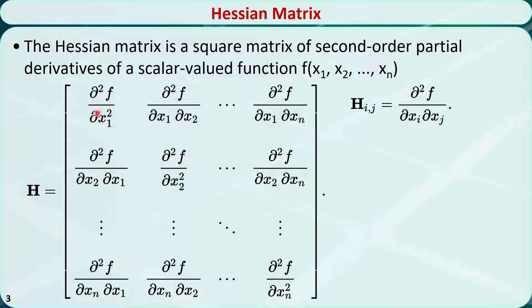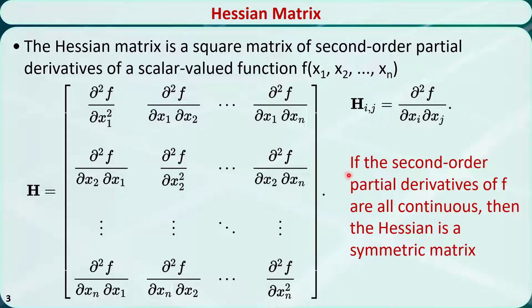Therefore, this element is the second-order partial derivative with respect to x1 and x1, and x2, and so on. If the second-order partial derivatives are all continuous, then the Hessian is a symmetric matrix — that means hij is equal to hji.